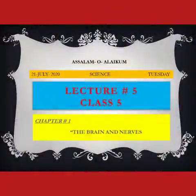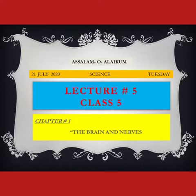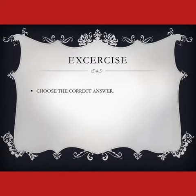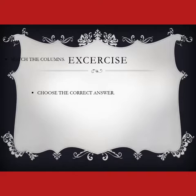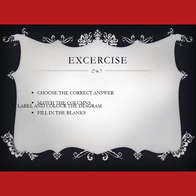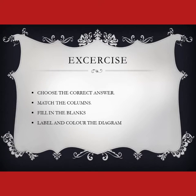Bismillah ar-rahman ar-rahim. Assalamu alaikum class. This is our lecture number five, class five, chapter number one: The Brain and Nerves. In this lecture we are going to study the exercise. In the exercise we have four types of questions: number one, choose the correct answer; number two, match the columns; number three, fill in the blanks; number four, label and color the diagrams.